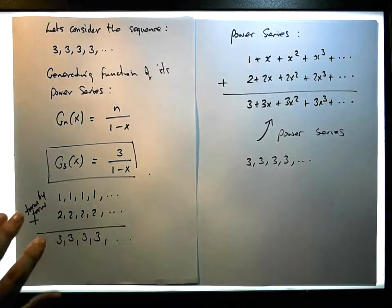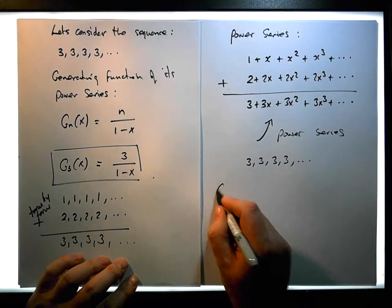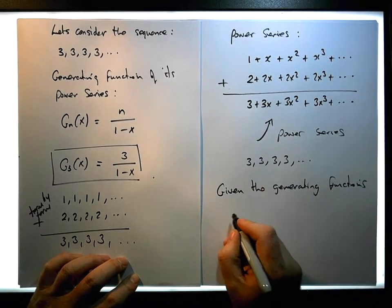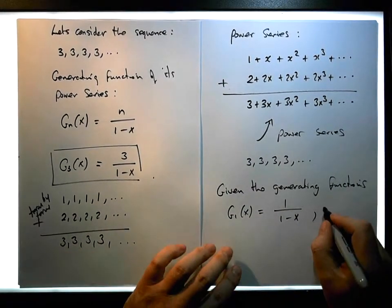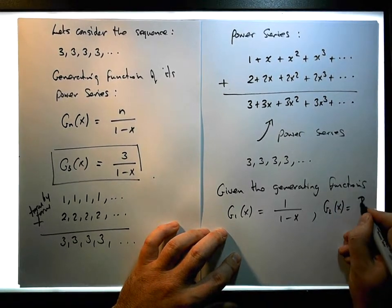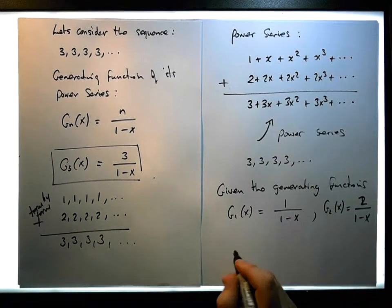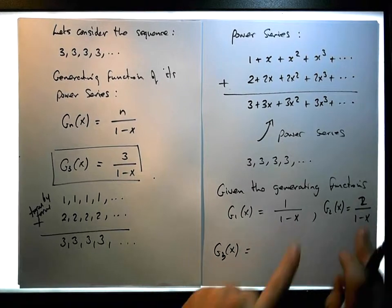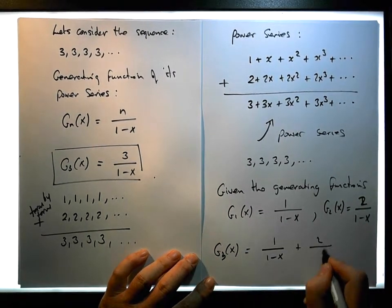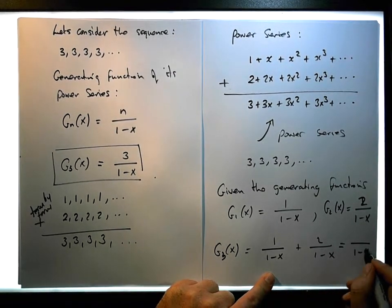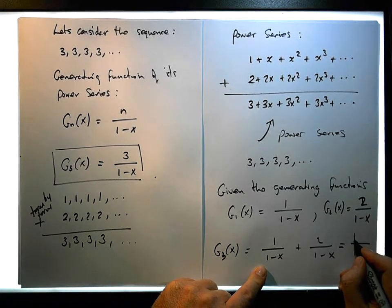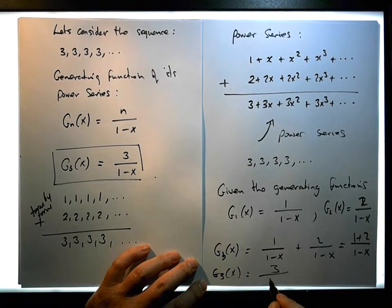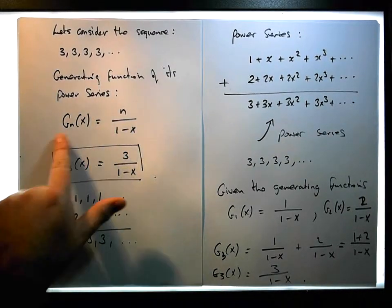This is the powerful thing about generating functions: given g_1(x) which equals 1 over (1 minus x), and g_2(x) which equals 2 over (1 minus x), we get g_3(x) as the sum of the two generating functions: 1 over (1 minus x) plus 2 over (1 minus x). With a common denominator of (1 minus x), this gives us 3 over (1 minus x), which is exactly what we got from the general term.